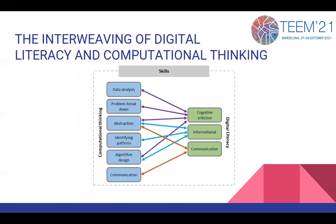To establish an interweaving between digital literacy and computational thinking, it is necessary to point out intersecting areas among the components of both skills to move forward with the construction of a conceptualization that allows a final definition. First, cognitive criticism literacy represents the ability to select, analyze, understand, manage, and socialize information. It is closely related with four skills from computational thinking: to carry out data analysis, to break down a problem, to abstraction, and to algorithm design.